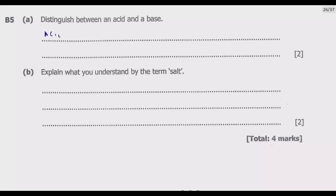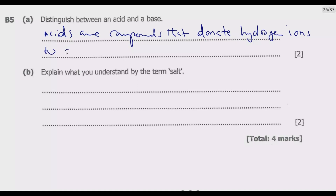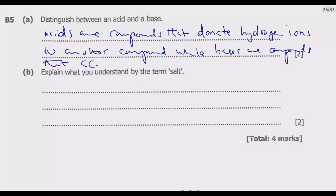Acids are compounds that donate hydrogen ions to another compound, while bases are compounds that accept hydrogen ions. That is the distinction factor. The other things are properties, but the question is not asking you to give the properties. You need to distinguish them using these critical differences: acids donate hydrogen ions while bases accept hydrogen ions.